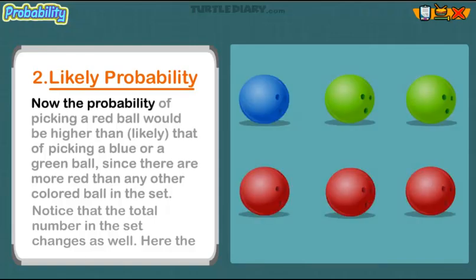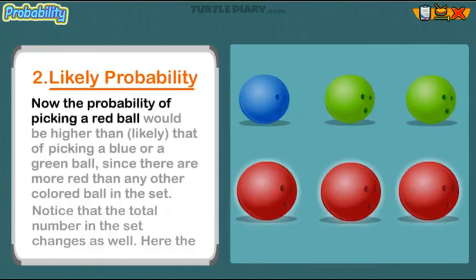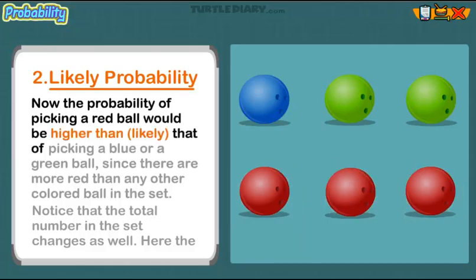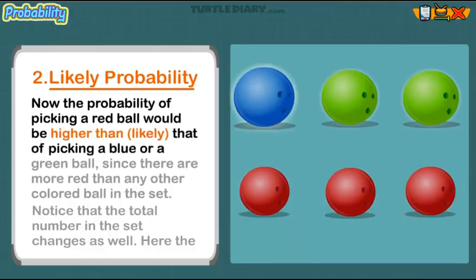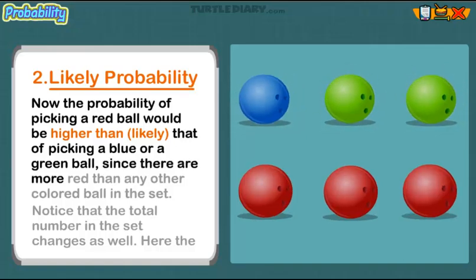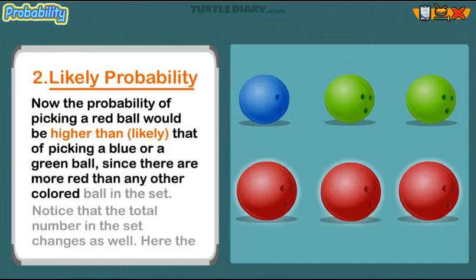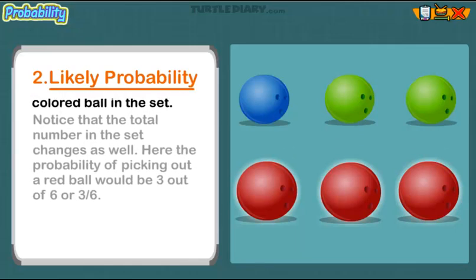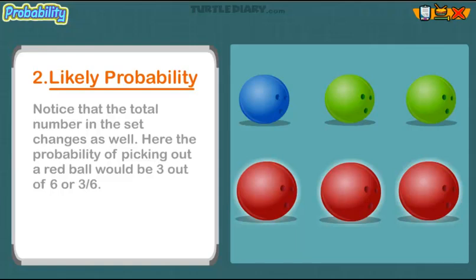The probability of picking a red ball would be higher than that of picking a blue or a green ball, since there are more red than any other colored ball in the set. Notice that the total number in the set changes as well. Here, the probability of picking out a red ball would be three out of six, or three-sixths.